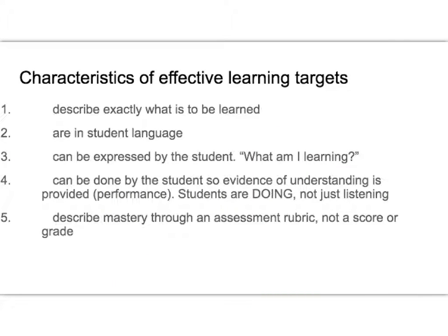Learning targets can be good or not so good — effective or ineffective. To be effective, they need to describe exactly what we want students to learn. They need to be in student language, expressed so the student could say, what am I supposed to be learning? They are things that should be able to be done by students so that there's evidence of understanding — students are doing, not just listening. And a good learning target describes mastery through an assessment rubric, not just a score or grade, but something with very specific criteria that can be measured.